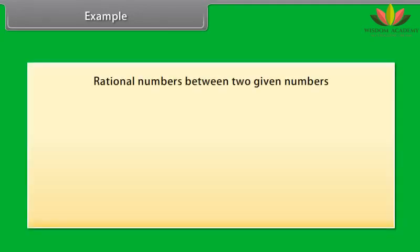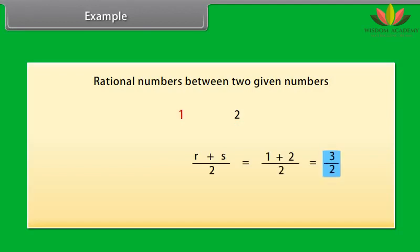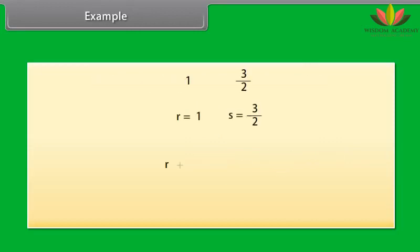Example. Let's now learn how to find rational numbers between two given numbers. The given numbers are 1 and 2. Say 1 is R and 2 is S. To find the rational number between R and S, we add R and S and divide the sum by 2. So we get (1 + 2)/2 = 3/2. Therefore, the rational number between 1 and 2 is 3/2. Similarly, the rational number between 1 and 3/2 is 5/4.